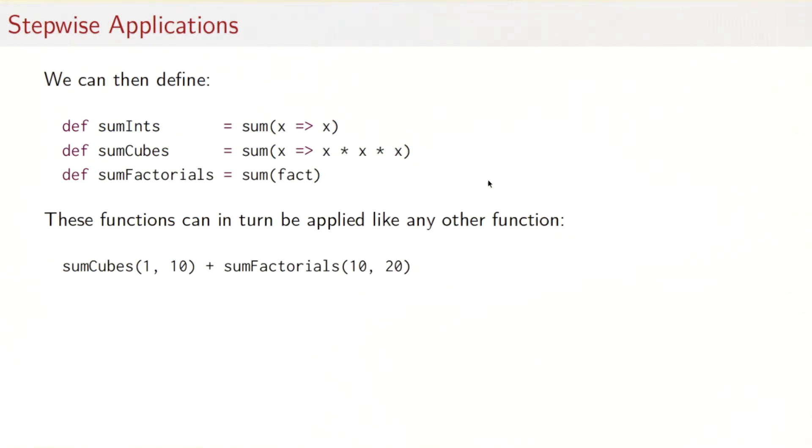So if we do that, then we can in fact define sum ints to be simply sum of x arrow x, sum cube is sum of the cubing function, and sum factorials is sum of the fact function. And it turns out that these functions are just exactly the same as the functions we defined before. And they can be applied just like the functions we defined before. So we could say sum cubes one ten plus sum factorials ten twenty.